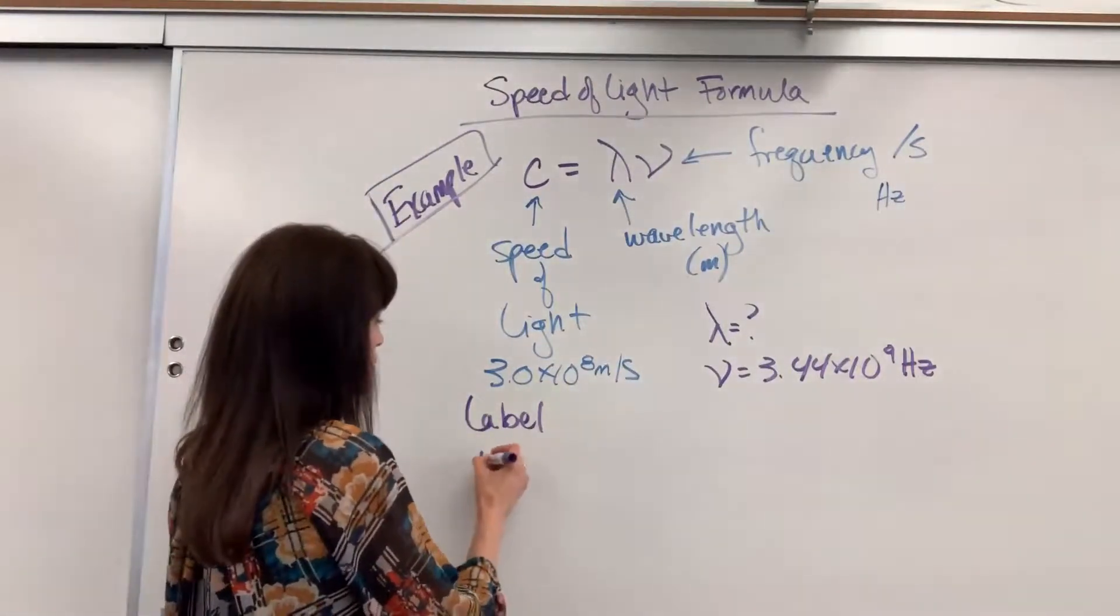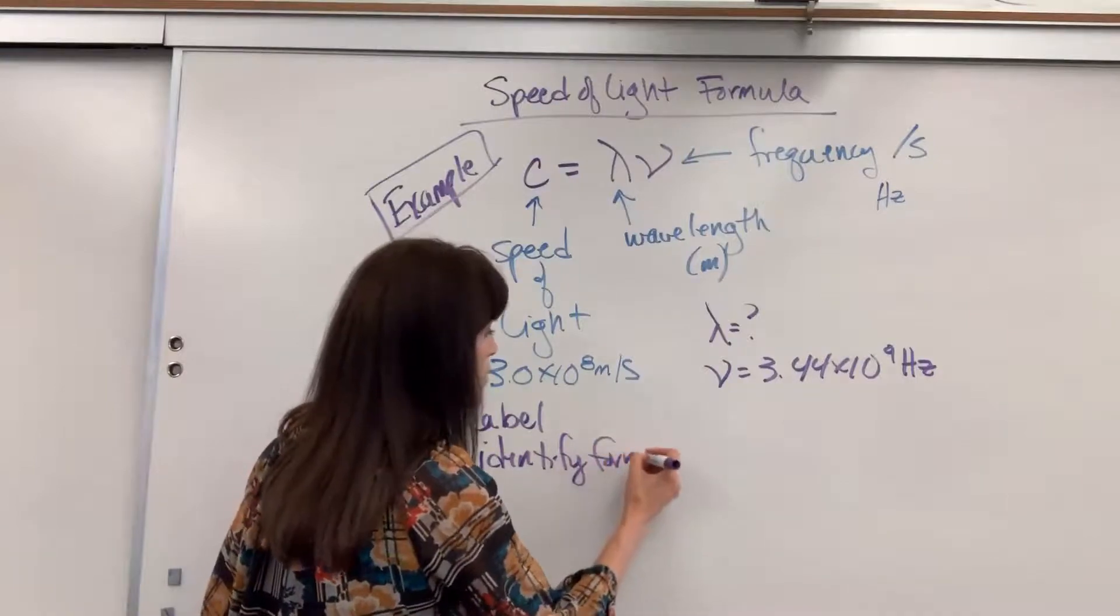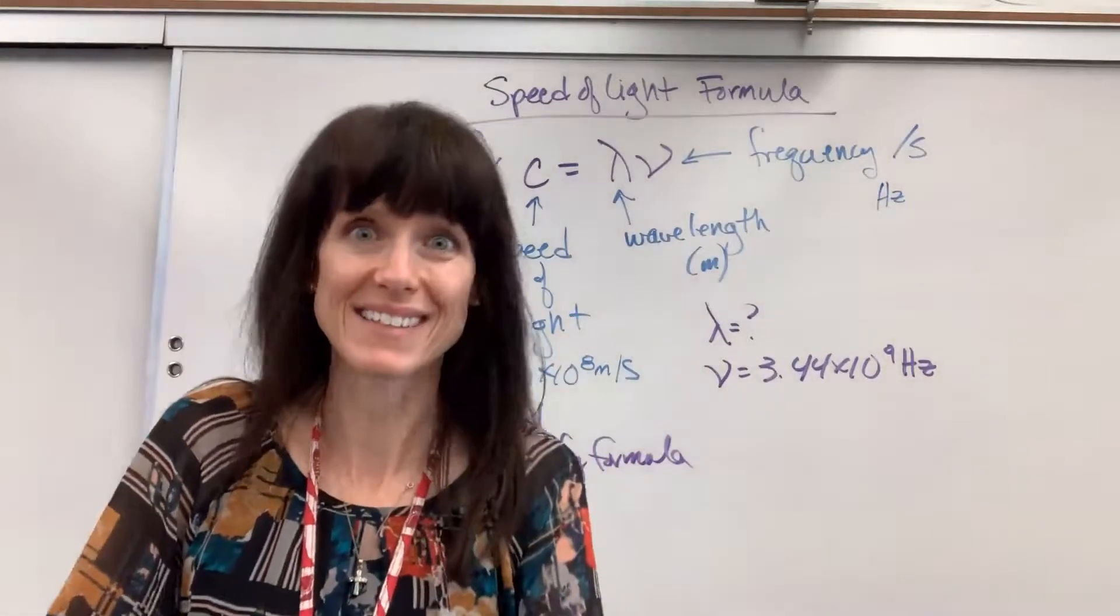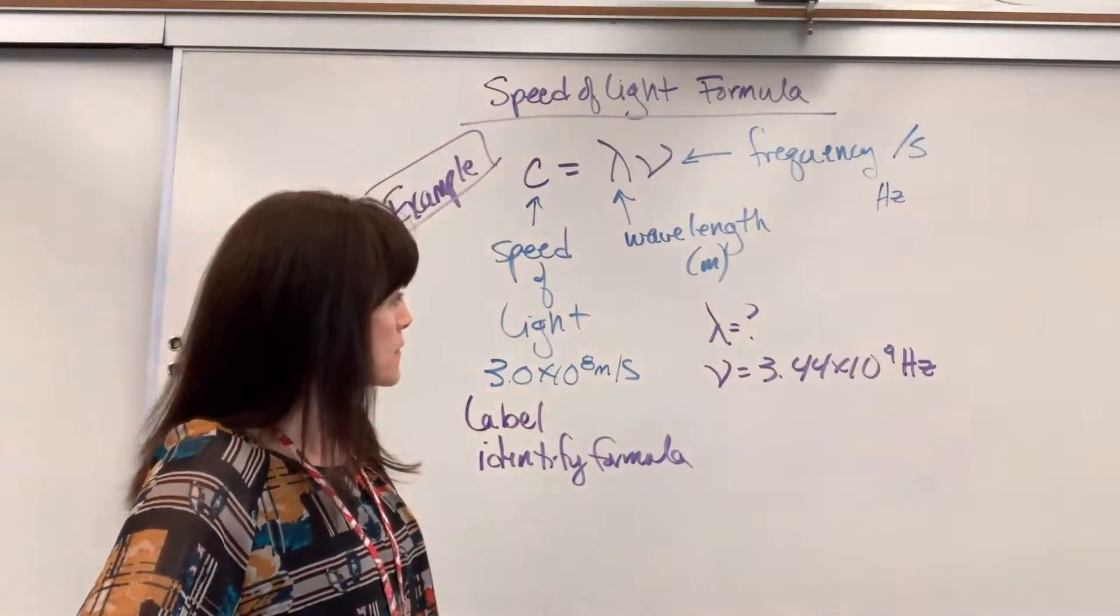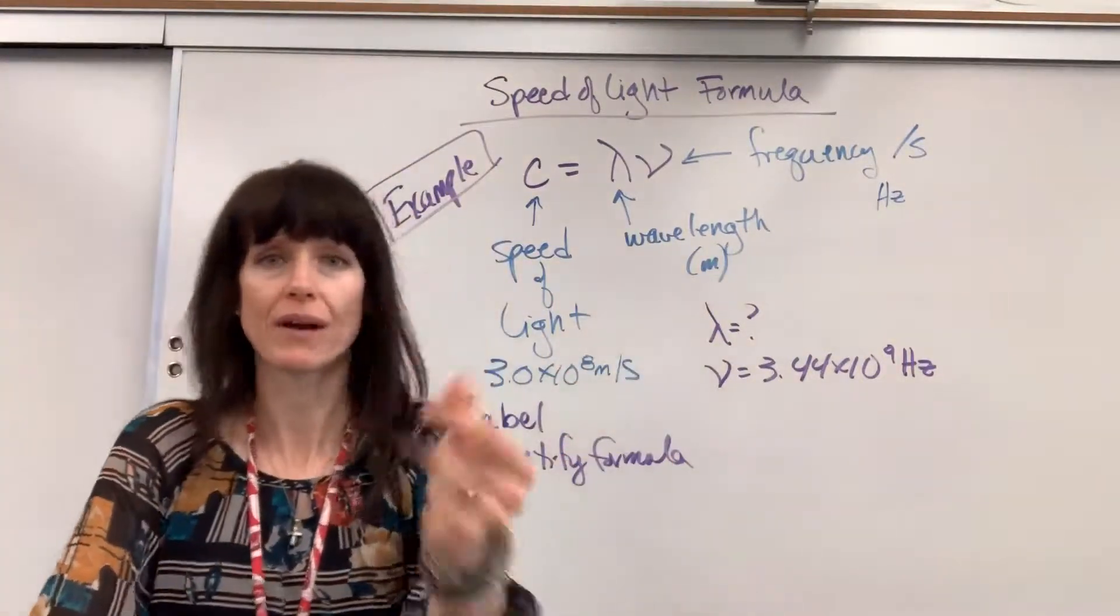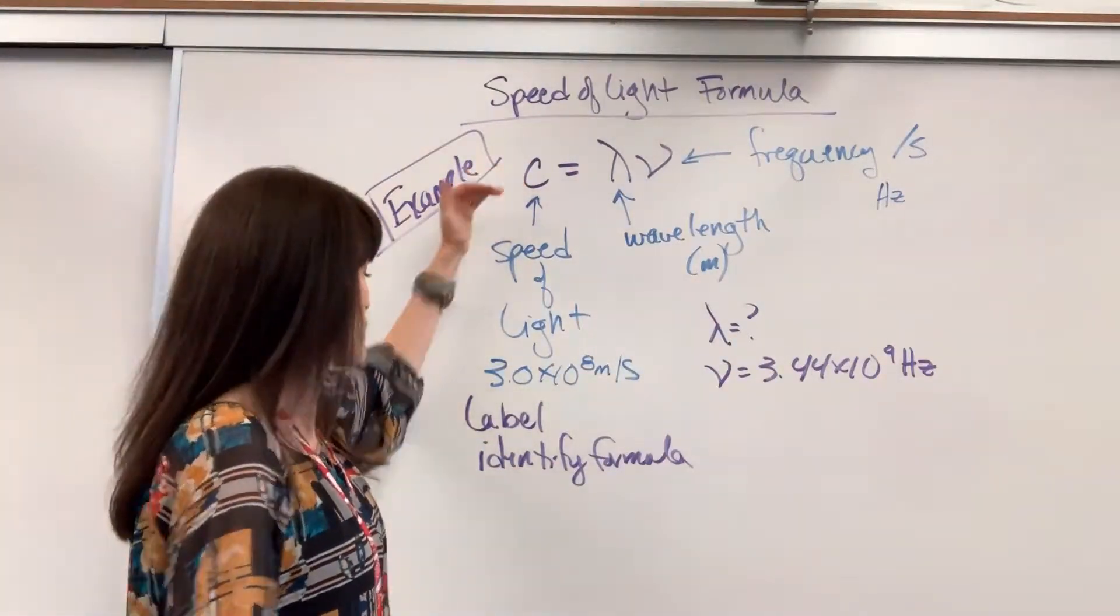So for your label, you're going to identify the formula. Well, because I'm dealing with light, a microwave, something from the electromagnetic spectrum, and I see wavelength and frequency, right away I know this is where I live. It's going to be our speed of light formula.